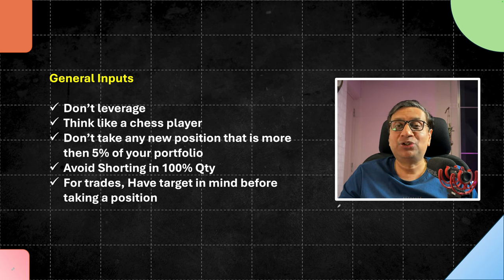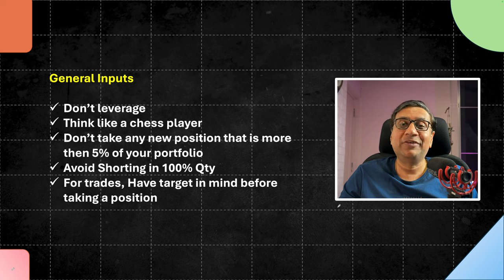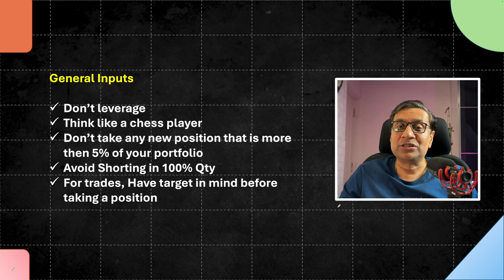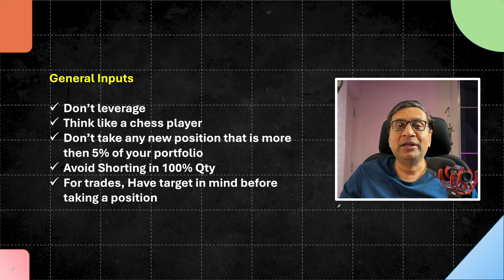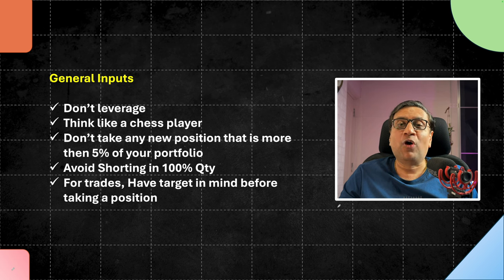If you have existing positions in stocks, don't short 100% of the quantity — markets could go up significantly and you don't want to lose that earning potential. For example, if you have 100 Reliance stocks, sell at most 20, 30, maybe 50 — not more than that. If you want to sell the remaining, maybe wait for a leg up. If you are left with 50, maybe sell 25 at a time. Don't sell everything in one go. When you take a trade, you should first know what will be your exit criteria.